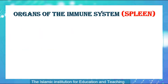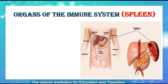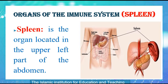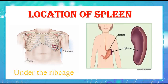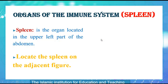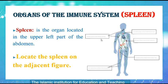The third organ of the immune system is the spleen. The spleen is an organ located in the upper left part of the abdomen. It's found under the ribcage and above the stomach. Please locate the spleen on the adjacent figure.